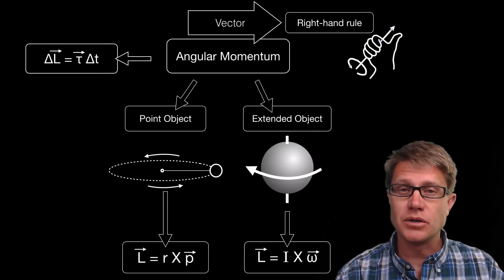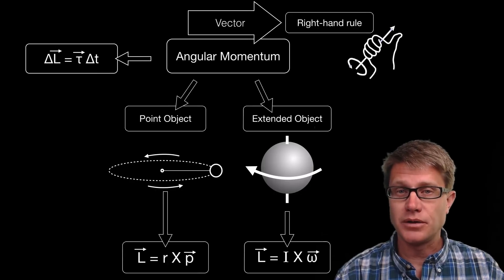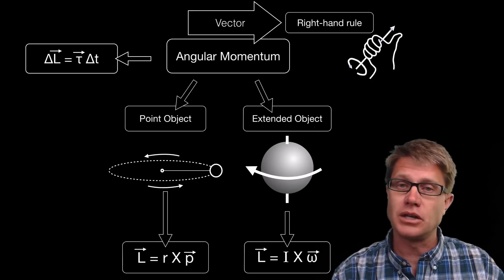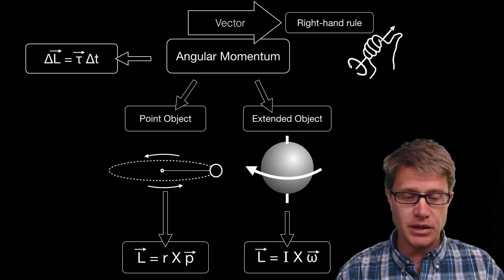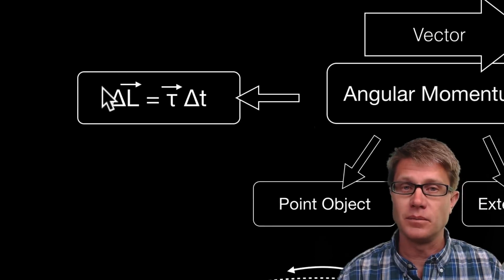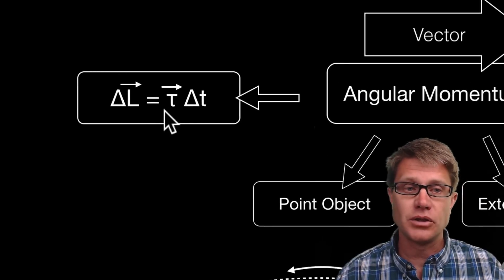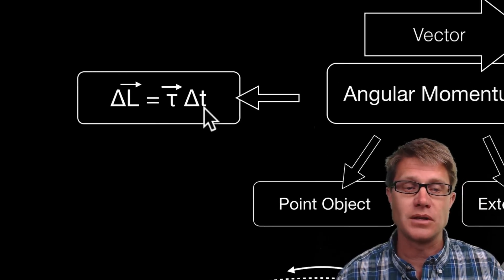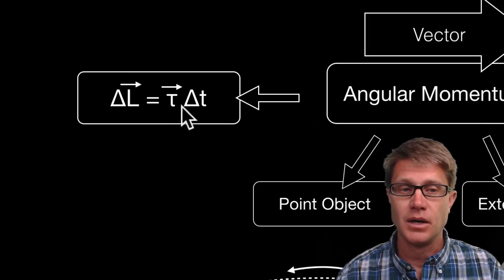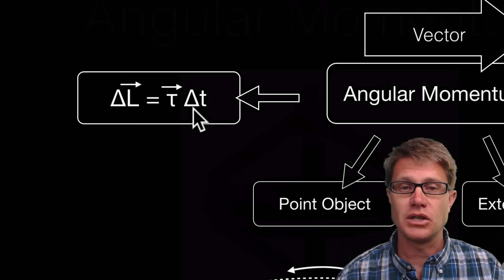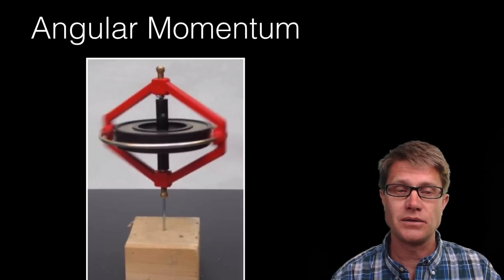When dealing with impulse, if you apply a force for a given period of time, that equals the change in momentum. The same applies here: the change in angular momentum is equal to the net torque times the change in time — not impulse, but torque times time gives the change in angular momentum.